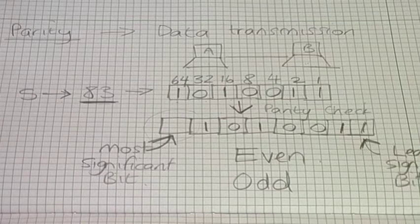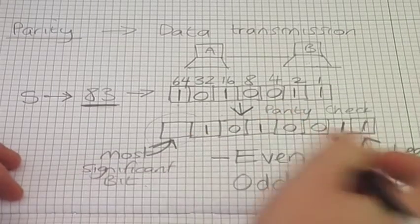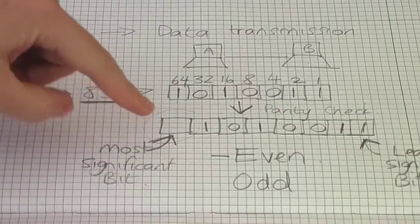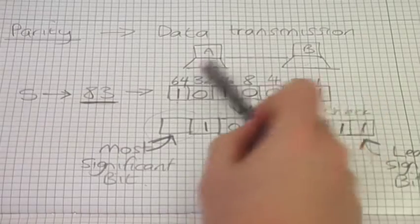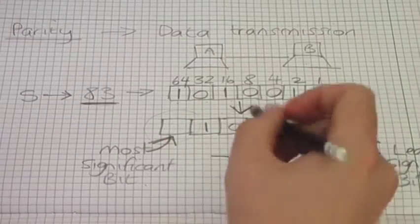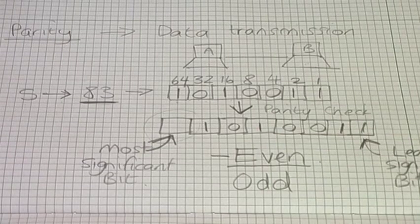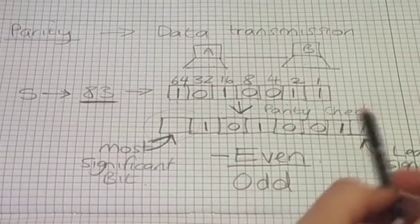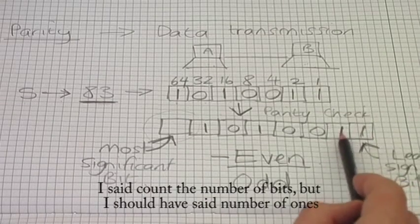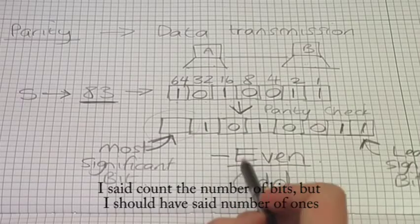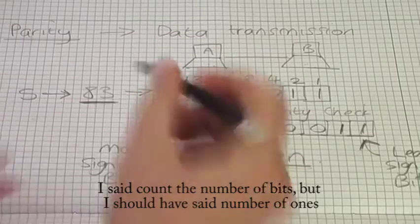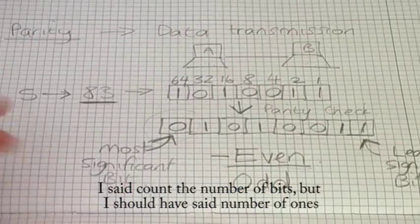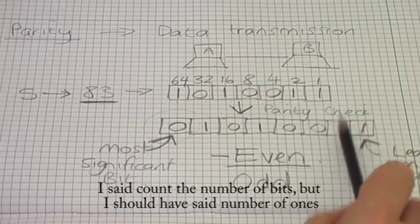I'll demonstrate how to do both so you'll understand the difference. Starting with even parity — what I need to do is work out what my parity bit is going to be. The computers have decided during handshaking to use the most significant bit and even parity. The computer counts the number of ones: one, two, three, four — that is an even number of ones.